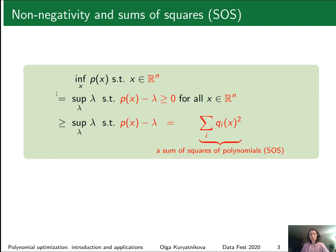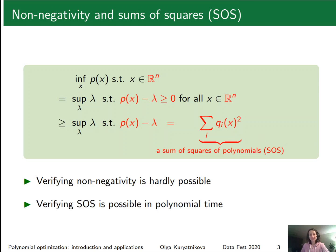At first glance it seems like we have just written one hard problem as another hard problem. However this is actually not the case — these problems are essentially different. While verifying that some polynomial is non-negative is hardly possible, verifying that some polynomial is a sum of squares is possible, and even possible in polynomial time. So we may sacrifice the quality of the bound, since we don't know if the two are equivalent, but we obtain a problem which is really solvable.